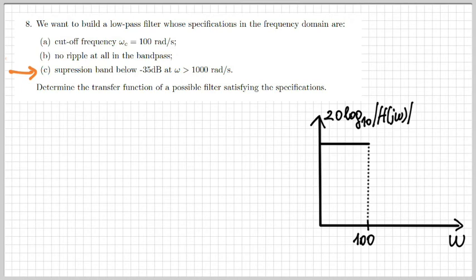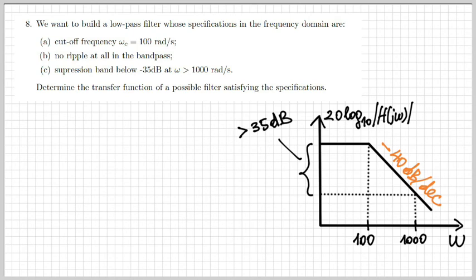The suppression band has to be below minus 35 dB for ω larger than 1000 radians per second. That means when ω grows by one decade, from 100 to 1000 rad/s, I need a drop in the response by at least 35 dB. For example, I can choose a slope of minus 40 dB per decade, which would satisfy my requirements. This is convenient because I can realize that with a second order pole. We know the cutoff frequency is at 100, so the term we're looking for is 1/(jω + 100)².